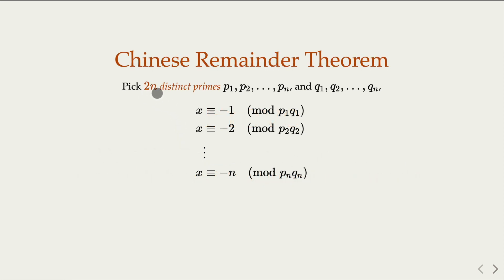We pick 2n distinct prime numbers, p₁, p₂ up to pₙ, and q₁, q₂ up to qₙ, the 2n of them. So the construction here is gonna be n congruence equations.